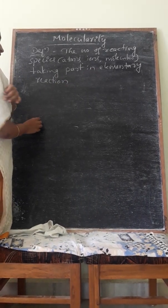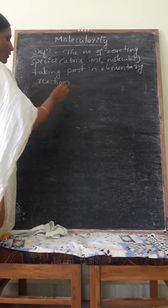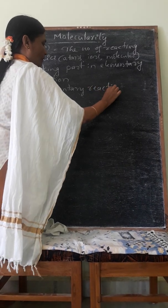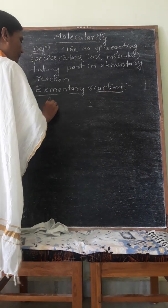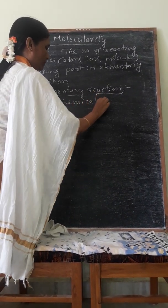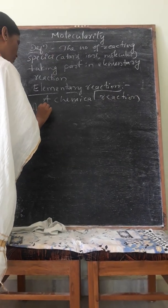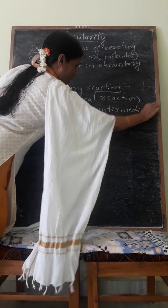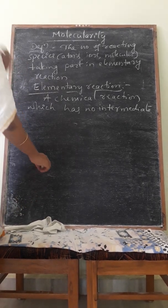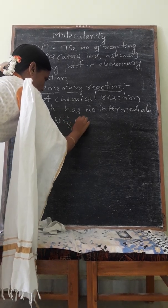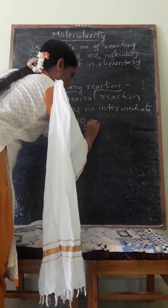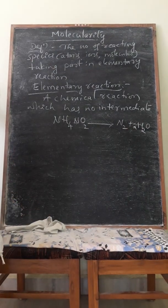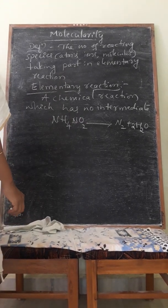What is an elementary reaction? An elementary reaction is a chemical reaction which has no intermediate. For example, the decomposition of ammonium nitrite gives N2 plus H2O. This is called an elementary reaction, and also serves as an example for molecularity. The molecularity of this reaction is 1.